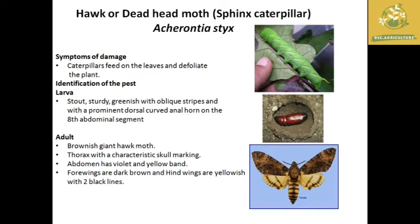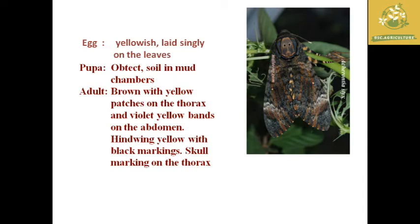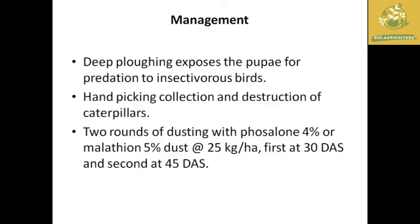The adult is a brownish hawk moth with a skull-like appearance on the thorax. The abdomen is violet and yellow banded; the forewings are dark brown and the hindwings are yellowish with two black lines. The pupa is an obtect pupa found in the soil. The egg is yellowish and laid singly on the leaves, making it difficult to identify on the plant surface.